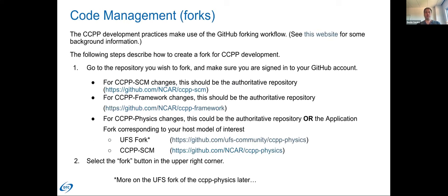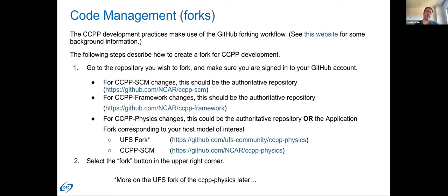I'm going to jump right into a lot of GitHub-specific stuff. If you're not familiar with GitHub, that's fine. There's a link here with more information that will walk you through the GitHub workflow, the idea of it, and the process. But I'm going to highlight those steps and how they relate to our code management. We use the GitHub forking workflow.